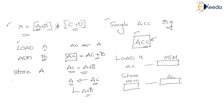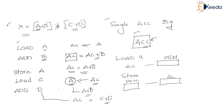Now we will execute Load C — the accumulator holds C — then Add D. After these instructions, the accumulator holds C + D. A + B is available in memory location A. So accumulator holds C + D and memory location A holds A + B.